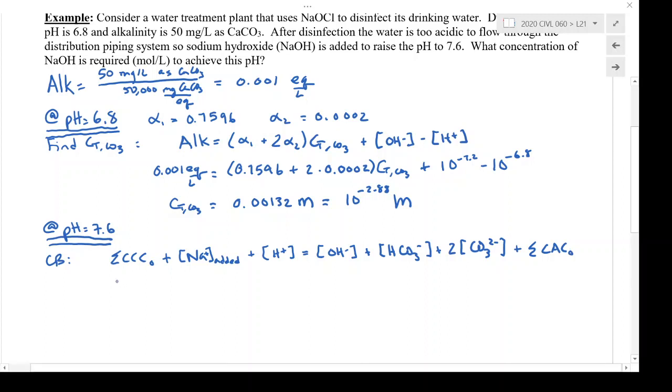So I'm going to reorganize this. I'll keep my CCCs over here, but then I'll lump it together with the CACs. And then keep the sodium on this side of the equation and note that it's what's added. And then I'm going to reorganize the species over here. So bicarbonate, carbonate, hydroxide, and I'm going to carry the hydrogen ion over to this side of the equation.